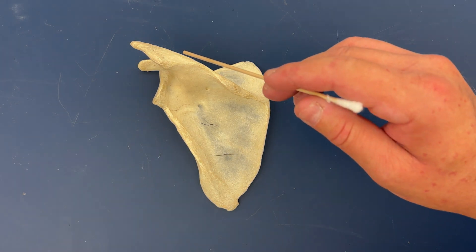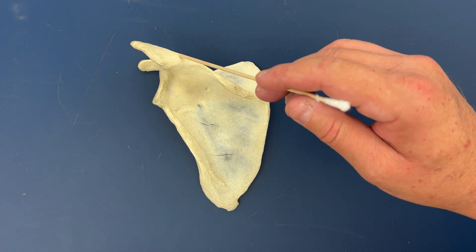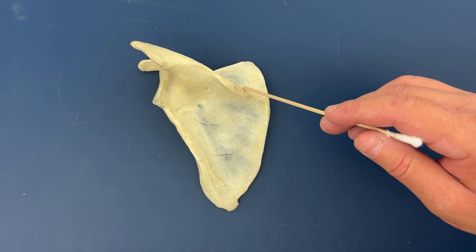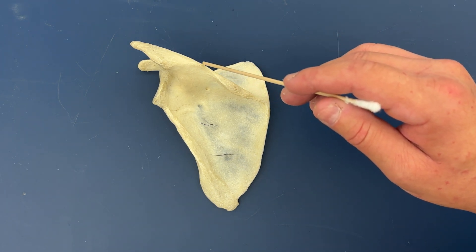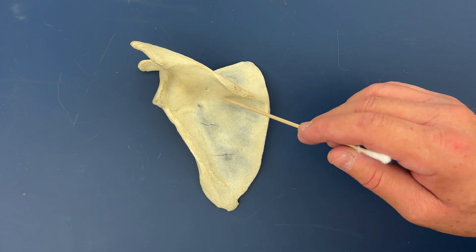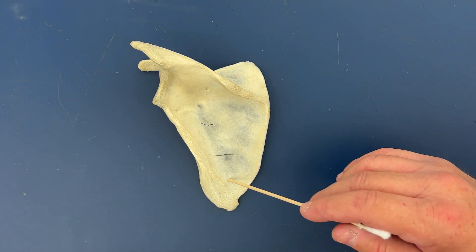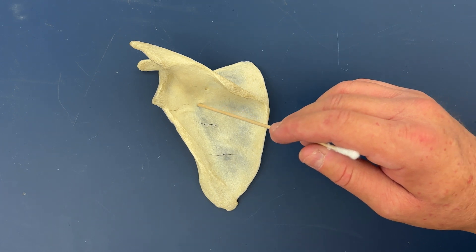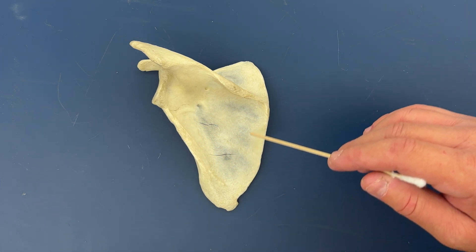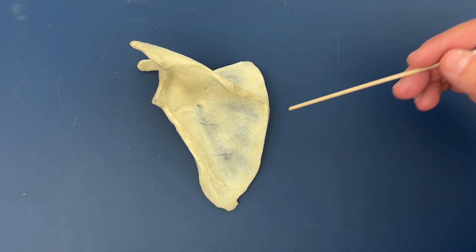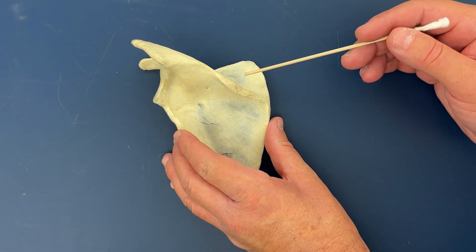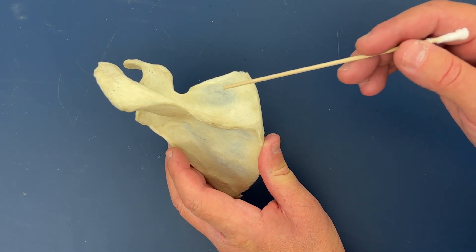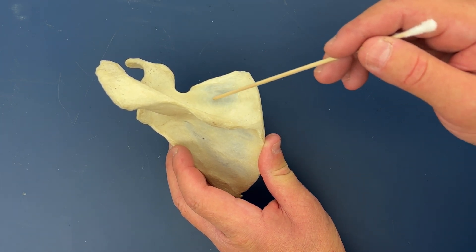Now we see the most prominent feature of the posterior side is the spine of the scapula here, and just inferior to that we have the infraspinous fossa and superior to the spine here we have the supraspinous fossa.